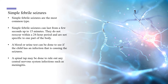Simple febrile seizures are the most common type. They can last from a few seconds up to 15 minutes. They do not reoccur within a 24-hour period and are not specific to one part of the body. A blood or urine test can be done to see if the child has an infection that is causing the seizures. In some situations, a spinal tap may be done to rule out any central nervous system infections, such as meningitis.